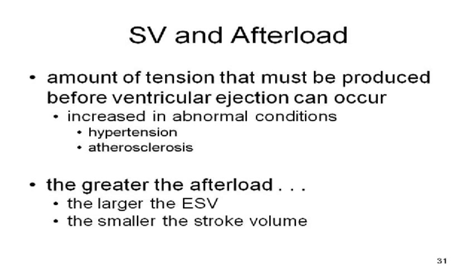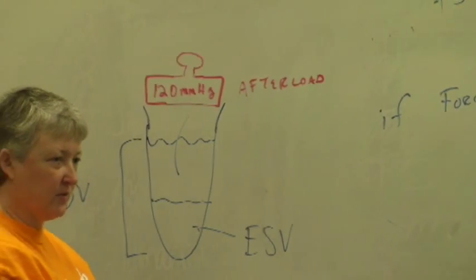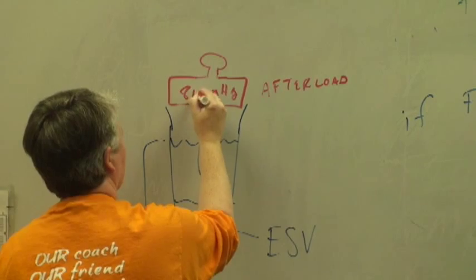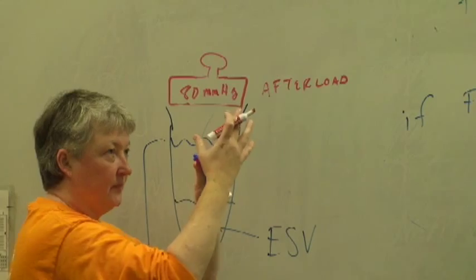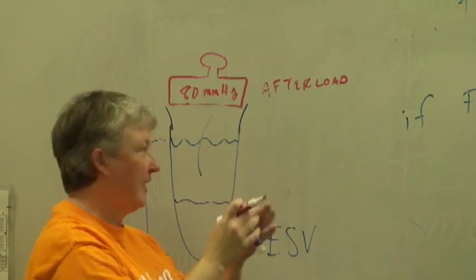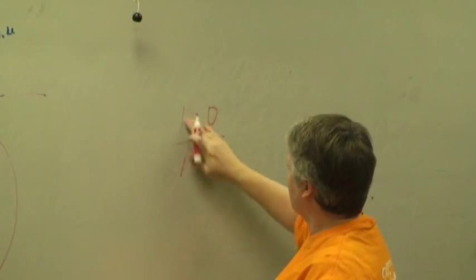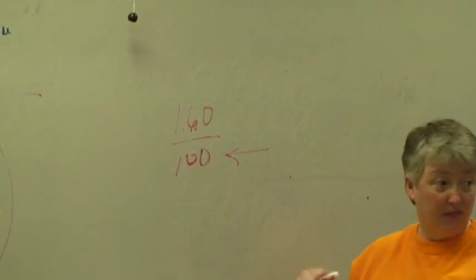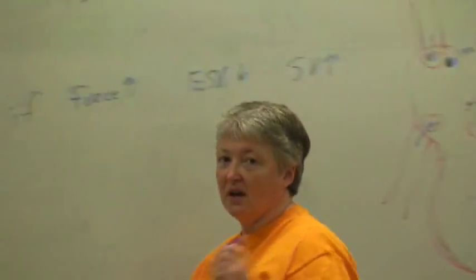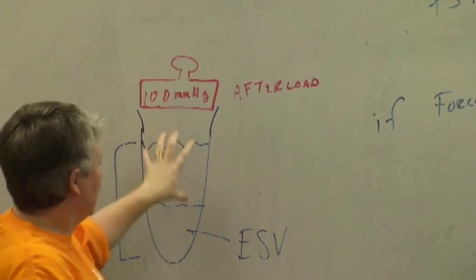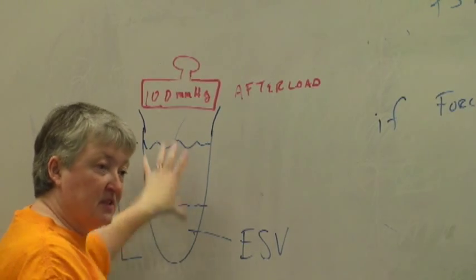Under normal healthy conditions, your afterload doesn't change. But with hypertension, blood pressure is normally 120 over 80. The diastolic pressure is normally 80 — when the ventricle is relaxed, the pressure in the aorta is the diastolic pressure. If diastolic pressure gets up to 100, say you're now 160 over 100, that's increasing the afterload, which means the heart is having to work harder to pump the same amount of blood out each time. During a regular contraction with diastolic pressure at 80, stroke volume might be 70 mL; if pressure rises to 100, maybe only 50 mL comes out.